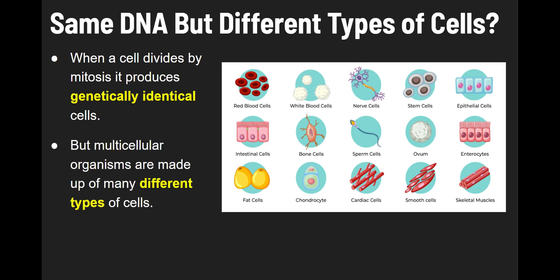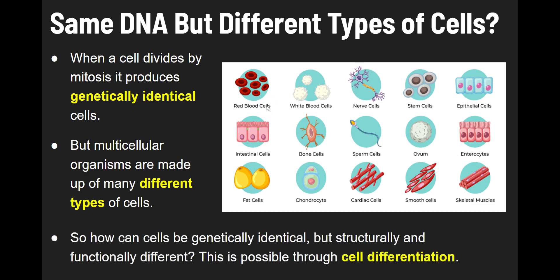But here's the thing. Multicellular organisms are made up of many different types of cells, and you can see those many different types of cells in this image. There are lots of different types, but they all have the same genes. So how can cells be genetically identical, but structurally and functionally different?